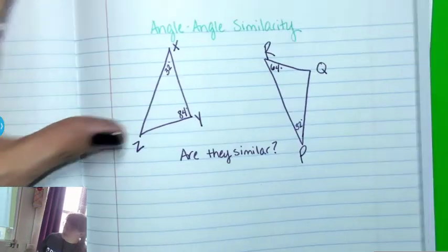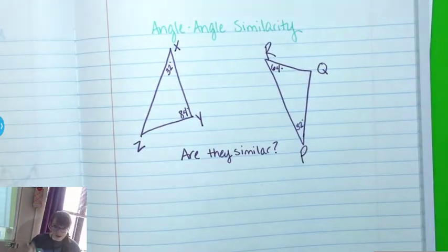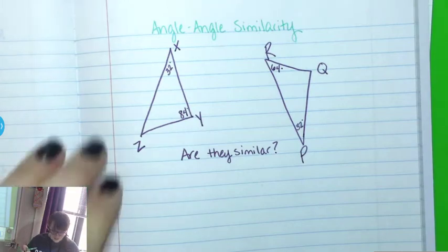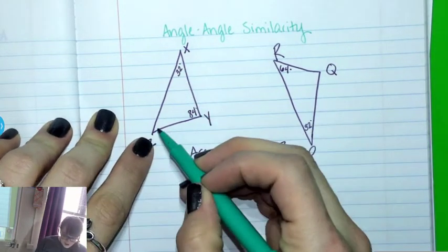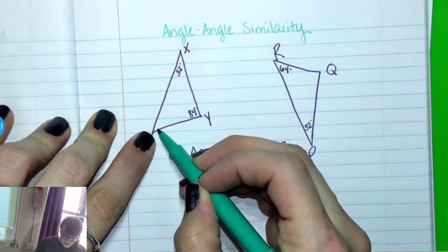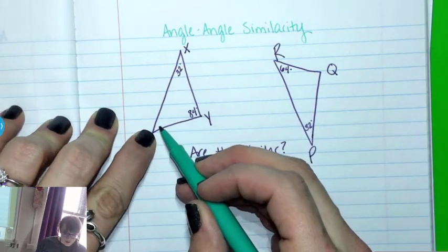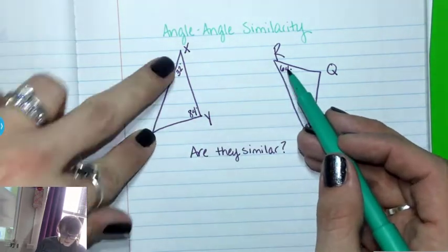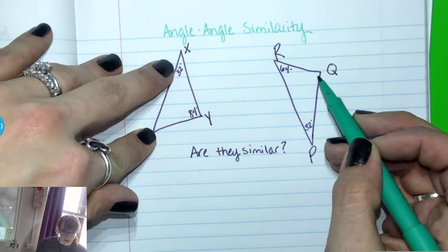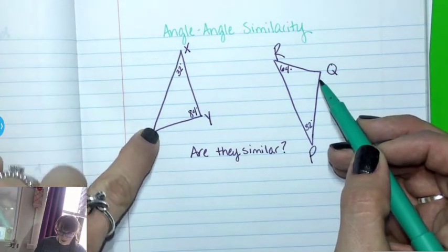So the math parts are what a couple of y'all said. One, I found the missing angle here and it was 64. And so that means that this is 64, 32, and so that one must be 84. That's one way to do it.